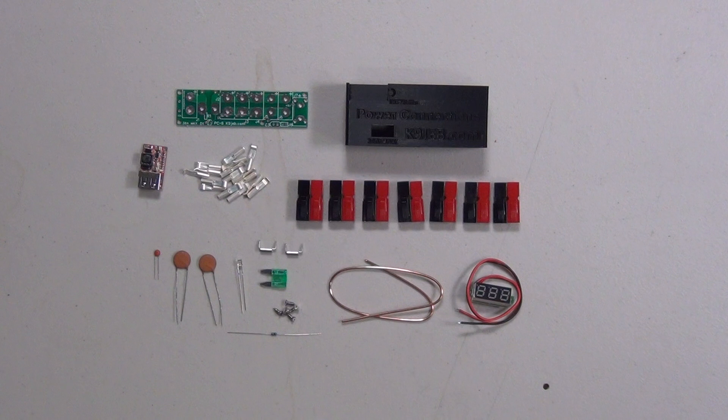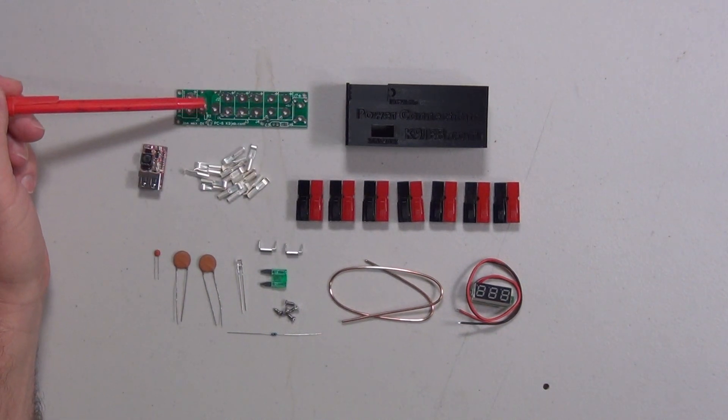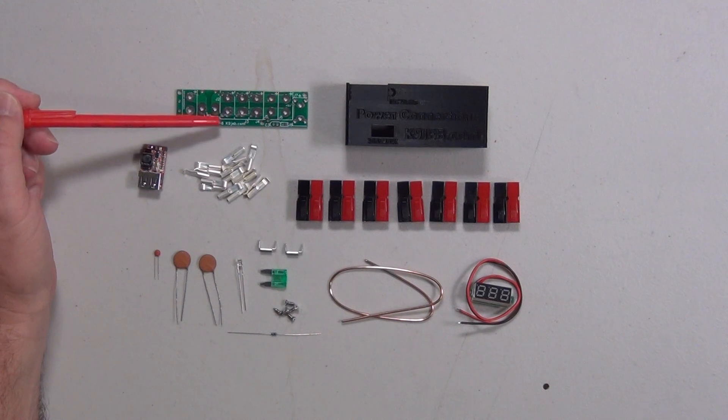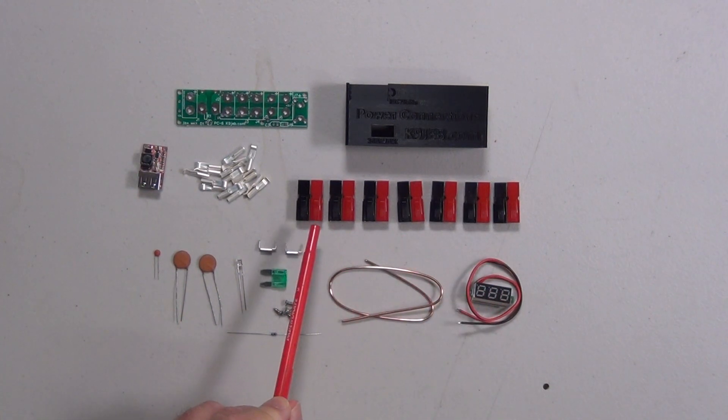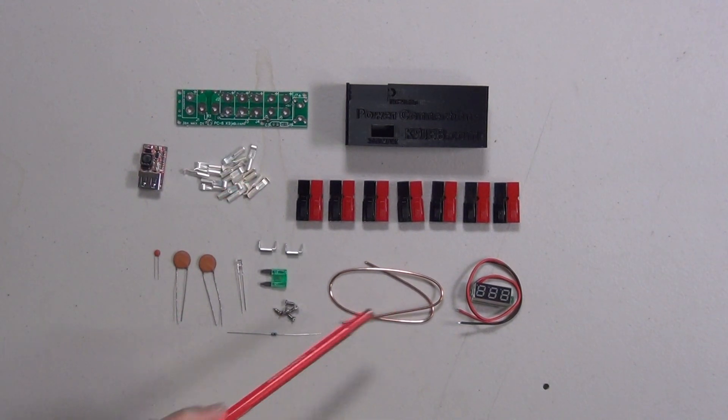The parts list. You get the main case, the board, which is a PC-6. You get seven of the power pole connector shells, enough connectors for them to put the cable in. You get an LED readout.